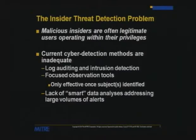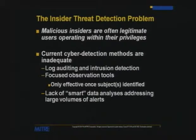One particular type of insider we're worried about are people who don't need to hack — they already have all the privileges they need. They're trusted insiders using their legitimate privileges for illegitimate purposes. They're problematic because access controls don't stop them; they're already inside the circle of trust. Traditional cyber detection methods like log auditing and intrusion detection look for attempted or successful rule-breaking behavior, but these people don't need to break rules.